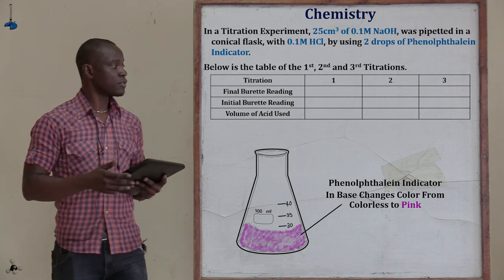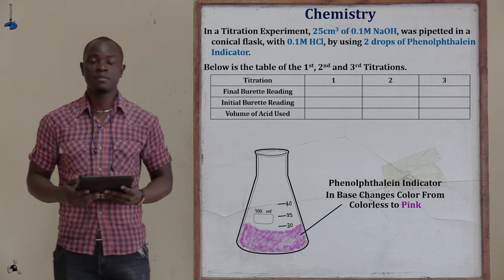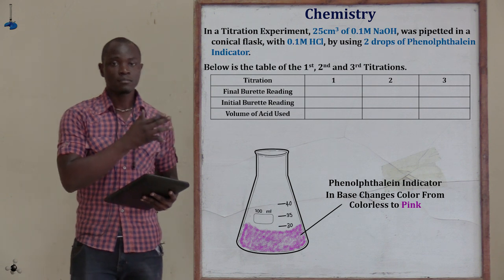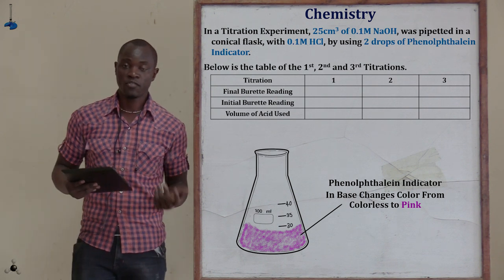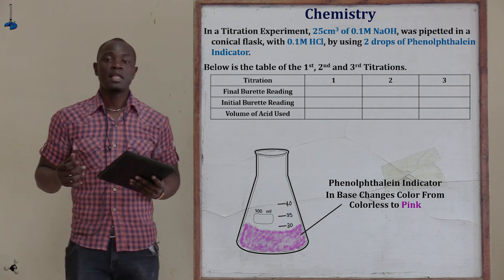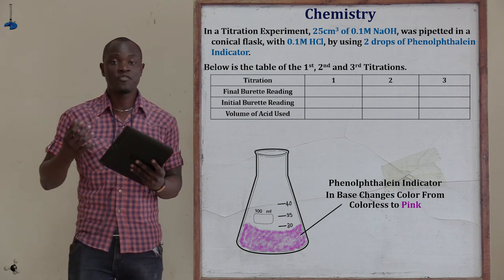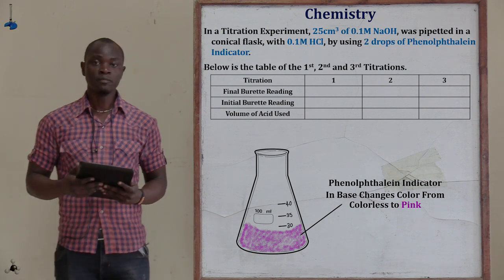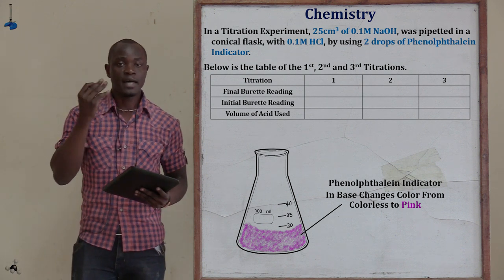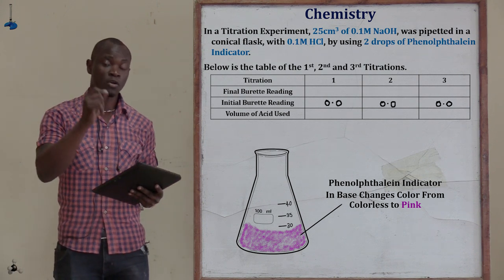Let's continue with the question. Below is a table of experiment 1, experiment 2, and experiment 3 for the three titrations carried out. The table has the final burette reading and the initial burette reading. The initial burette reading is the first reading recorded before we begin the titration — we check the volume of acid inside the burette before the experiment begins and record that volume.